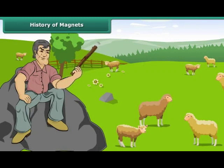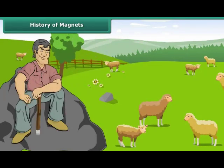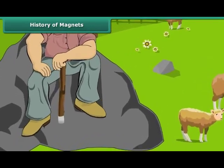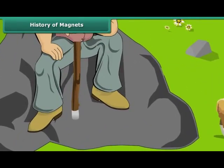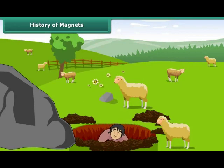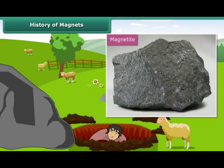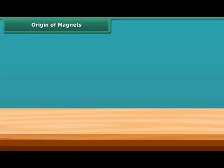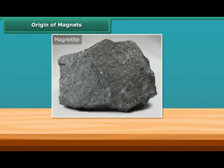Magnus was herding his sheep in an area of northern Greece called Magnesia, about four thousand years ago. Suddenly, the metal tip of his stick became firmly stuck to a large black rock on which he was sitting. To find the source of attraction, he dug up the earth to find magnetite, a natural magnetic material.